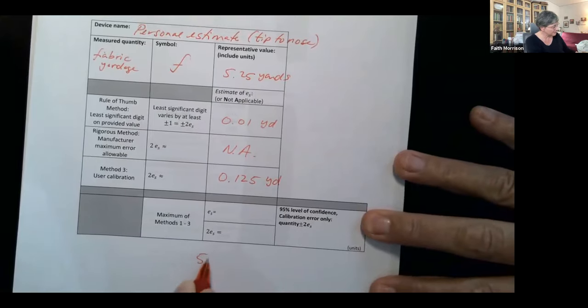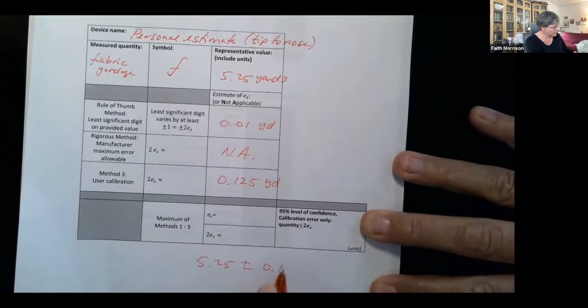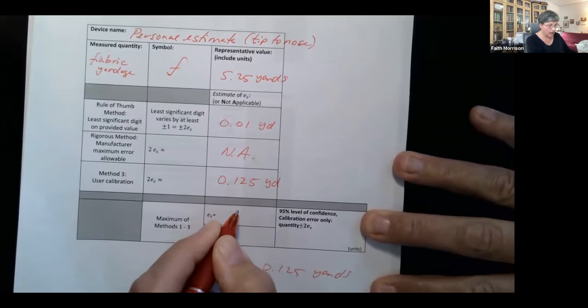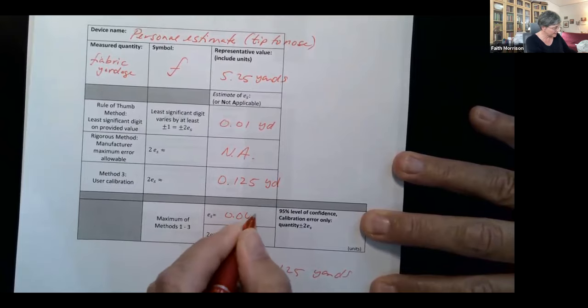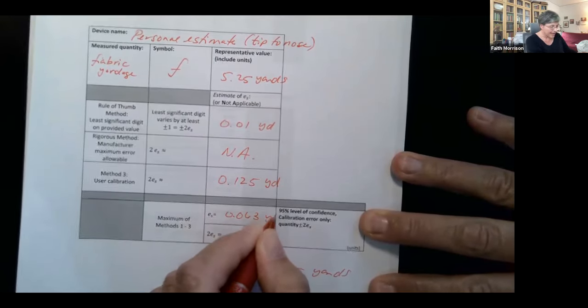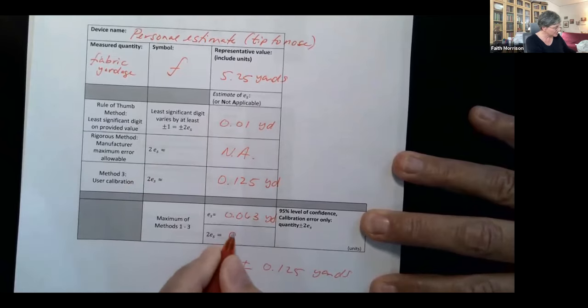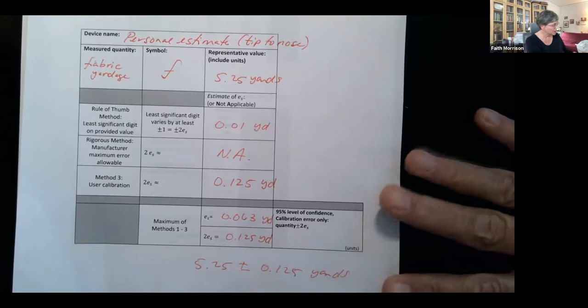So my answer here is going to be five and a quarter yards plus or minus the largest of the three here. So 0.125 yards. I can calculate ES, which again, I'll talk about a little bit later. And of course, two ES is the picking out which of these is the largest. And I end up with a way to answer the question.